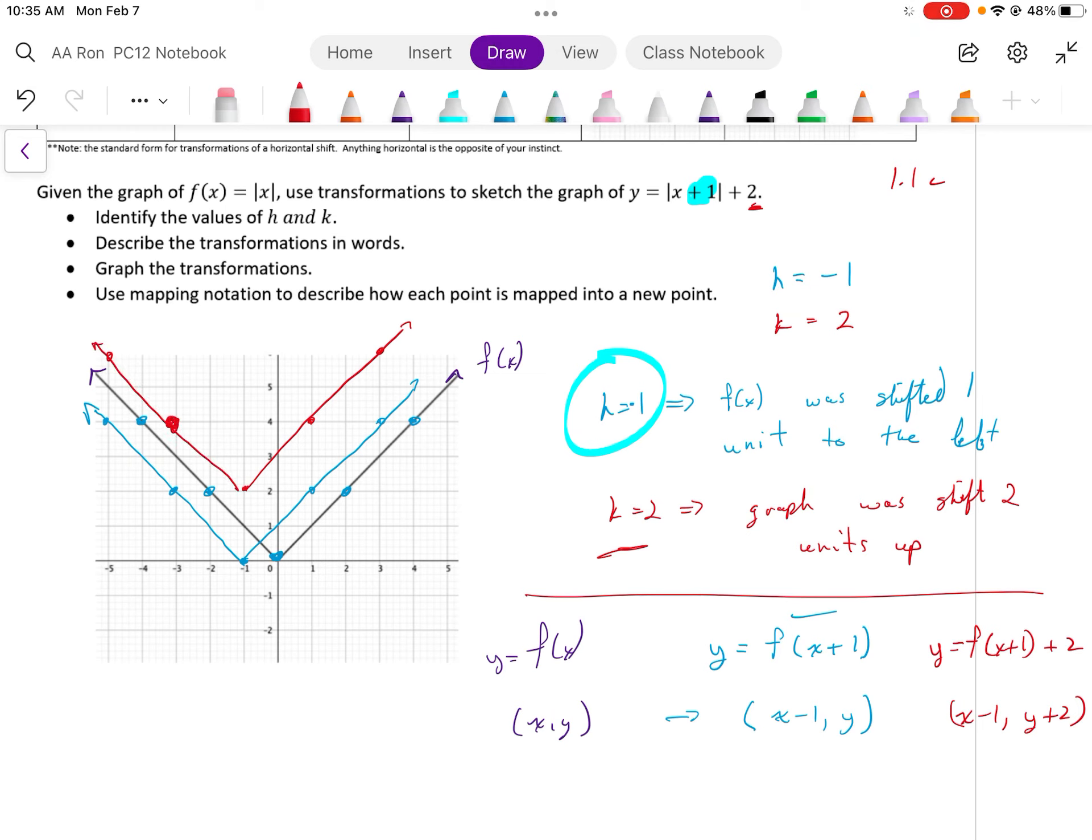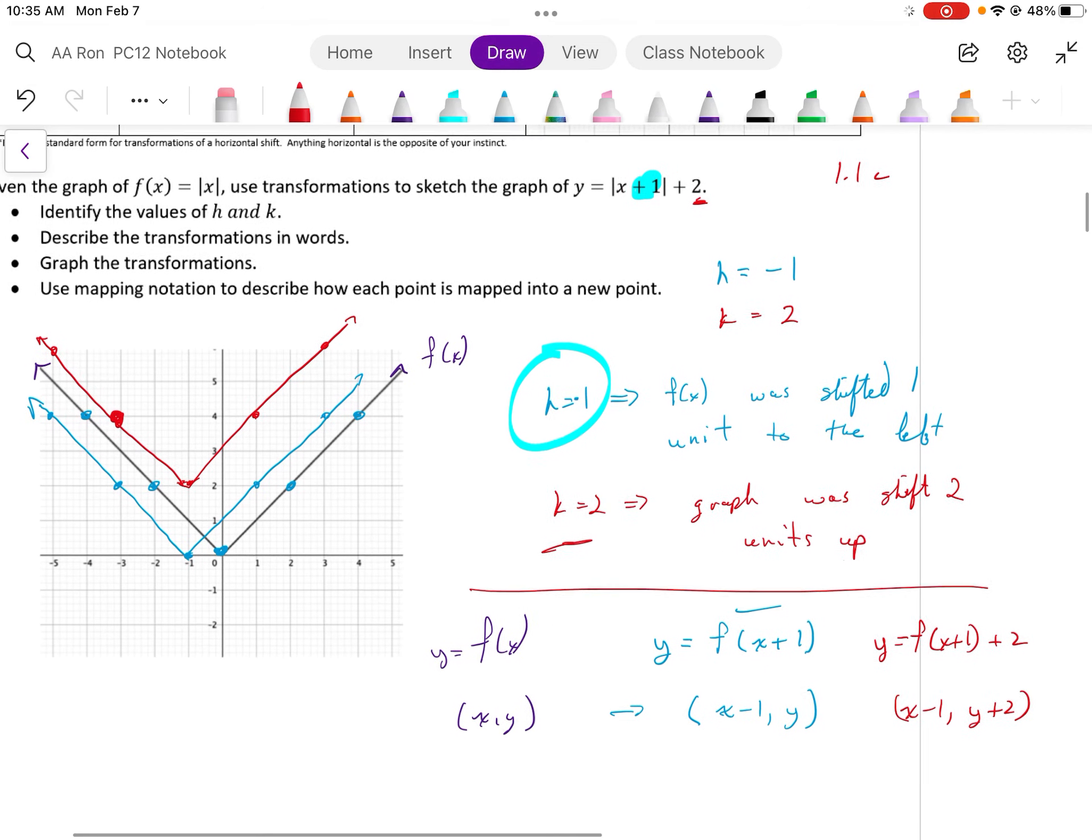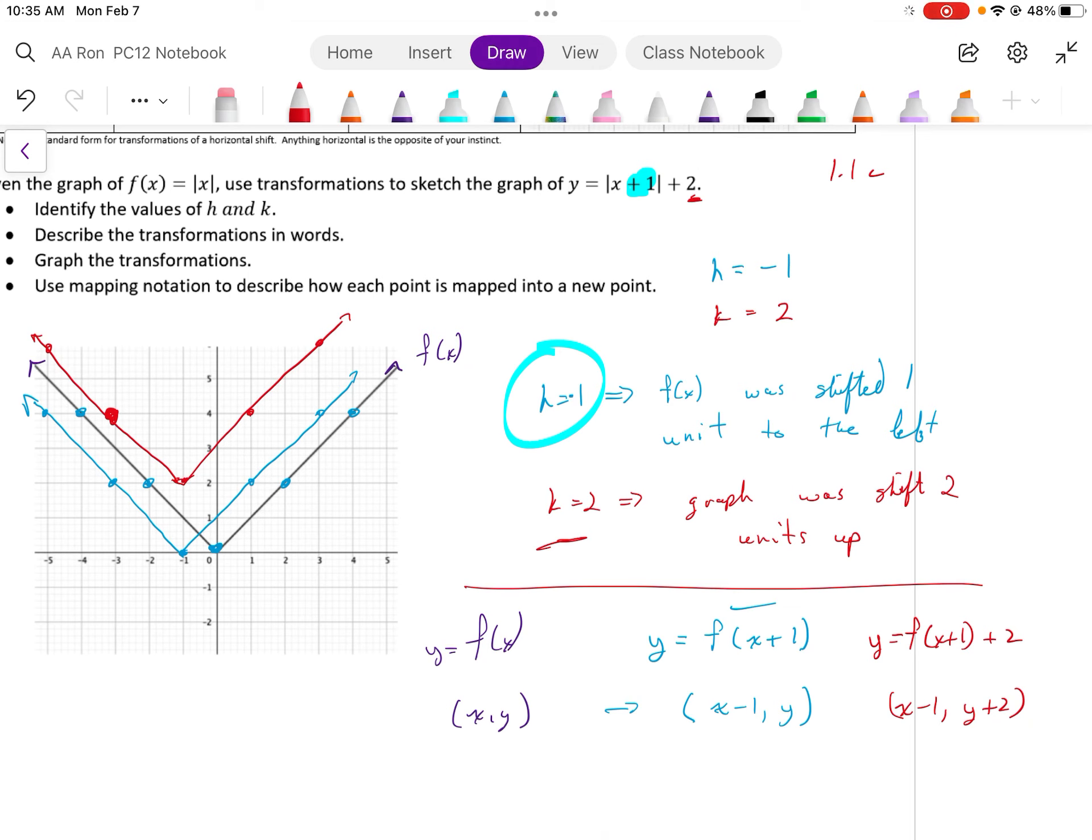Oh, I missed a point. There we are. Make that point bigger. Boom. There it is. By the way, that is the graph y equals f, open bracket, x plus 1, close bracket, plus 2.